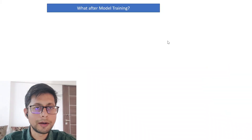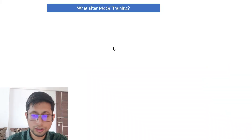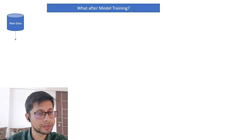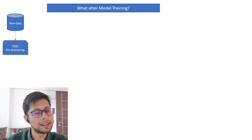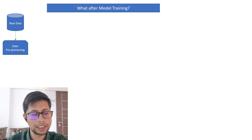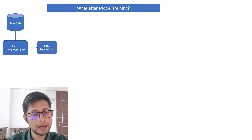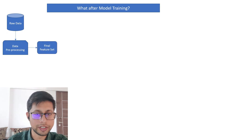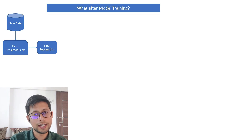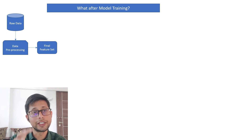So what happens after model training? To do model training you need raw data, which you read from a data warehouse. Then you do certain pre-processing steps — data transformation, data cleaning, feature engineering — and after that you have a final set of features ready. Once we are ready with the data, there is an important aspect I want to highlight: the feature store.